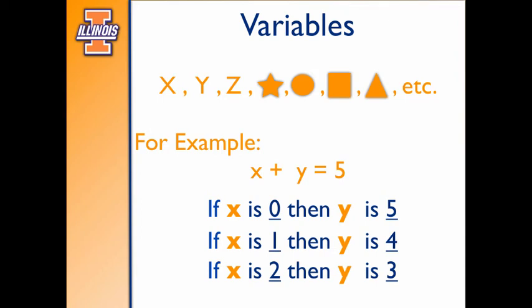Now these are just three examples of what we could put in place of these variables. These are all combinations of numbers for X and Y that make this number sentence true. There are literally infinite possibilities for this X plus Y equals 5, but here are just a few.